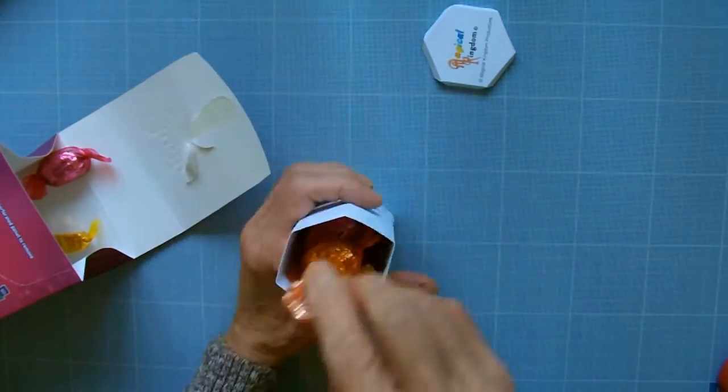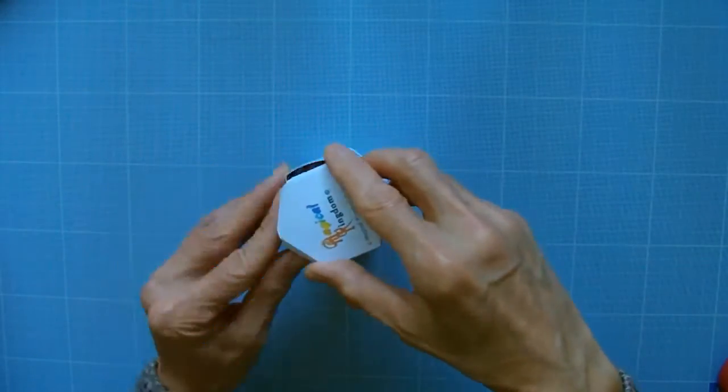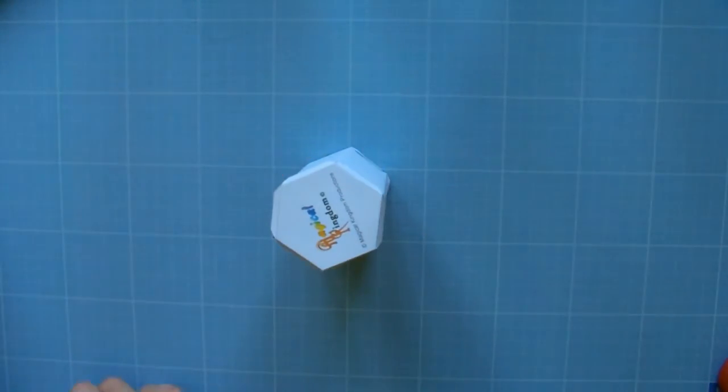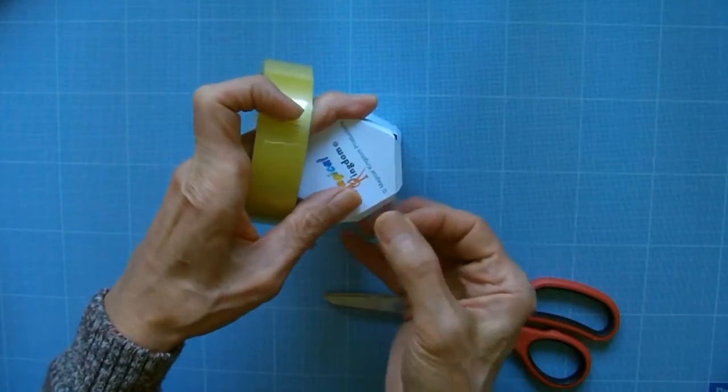Now fill the tube with small gifts and goodies. Cover the tube with the top lid and secure it with cello tape.